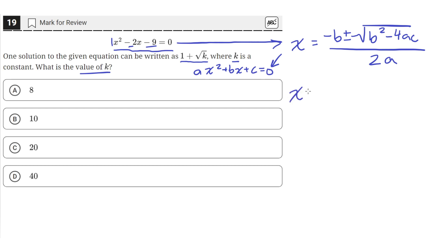Okay, so let's plug that into our formula. So negative b is going to be negative negative 2, so that's just 2 plus or minus the square root of b squared. So negative 2 squared is 4, minus 4 times a, which is 1, and c, which is negative 9. All that under the square root over 2a. So a is 1, so the denominator is just 2.